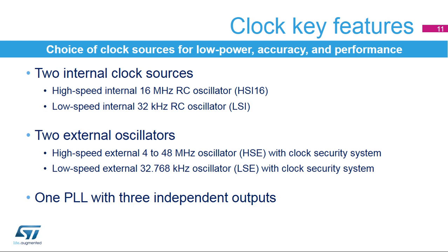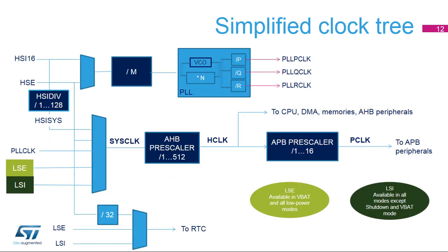STM32G0 devices embed a phase-locked loop with three independent outputs for clocking different peripherals at different frequencies. The system clock can be derived from the high-speed internal 16 MHz RC oscillator or HSI-16, the high-speed external 4 to 48 MHz oscillator or HSE, the low-speed internal oscillator or LSI, or the low-speed external oscillator or LSE.